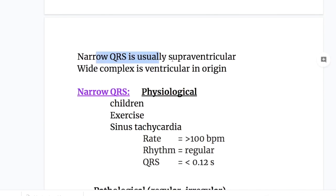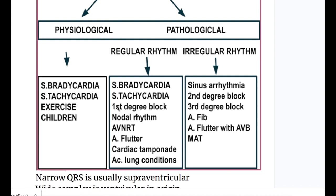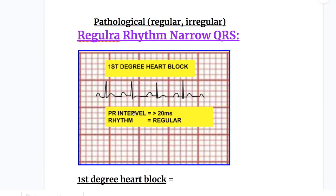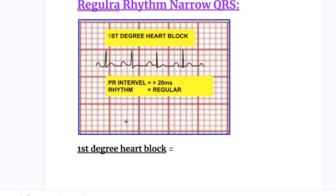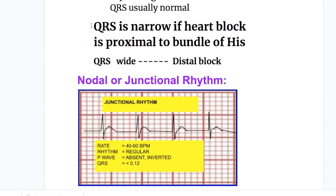Narrow QRS is usually supraventricular in origin, whereas wide QRS complexes are ventricular in origin. Next is first degree heart block. In first degree heart block, the PR interval is prolonged — more than 200 milliseconds. The rhythm is regular, giving a narrow QRS with regular rhythm. The QRS is narrow if the block is proximal to the bundle of His, and wide if it is distal.